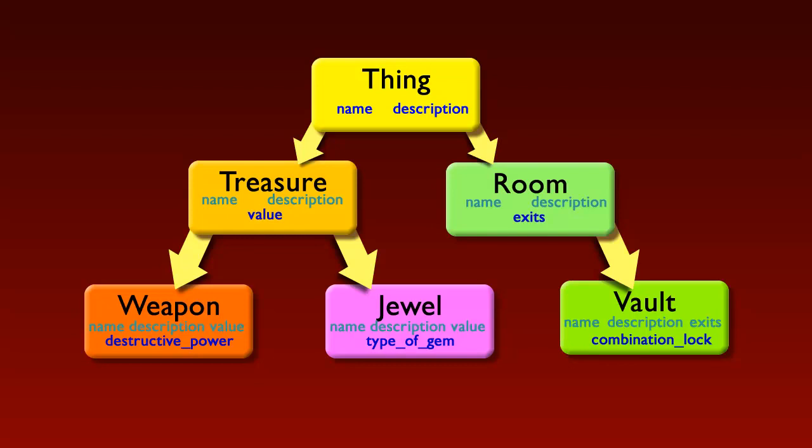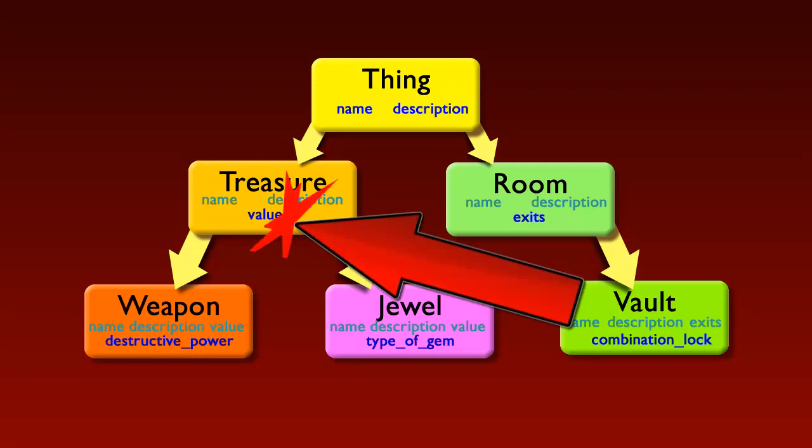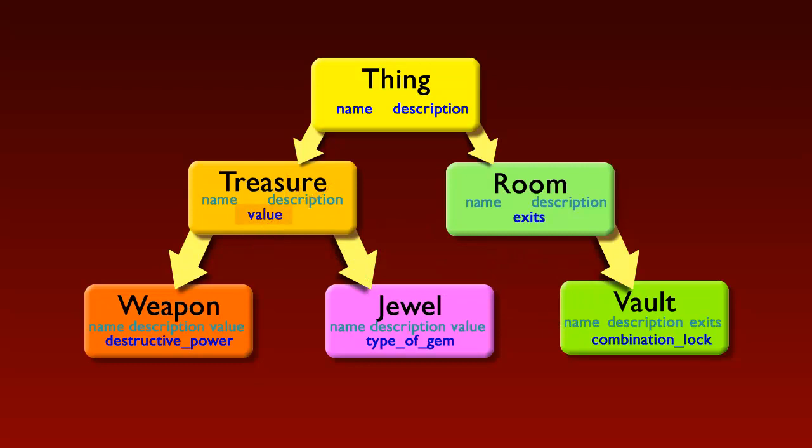So if I create a Vault object, it will have access to all the features defined in all its ancestors. So it has all the features of Room, that is name, description, and exits. But it won't have access to any features defined in some other branch of the family tree. So it won't have a value variable, for example, which is defined by Treasure in this branch.